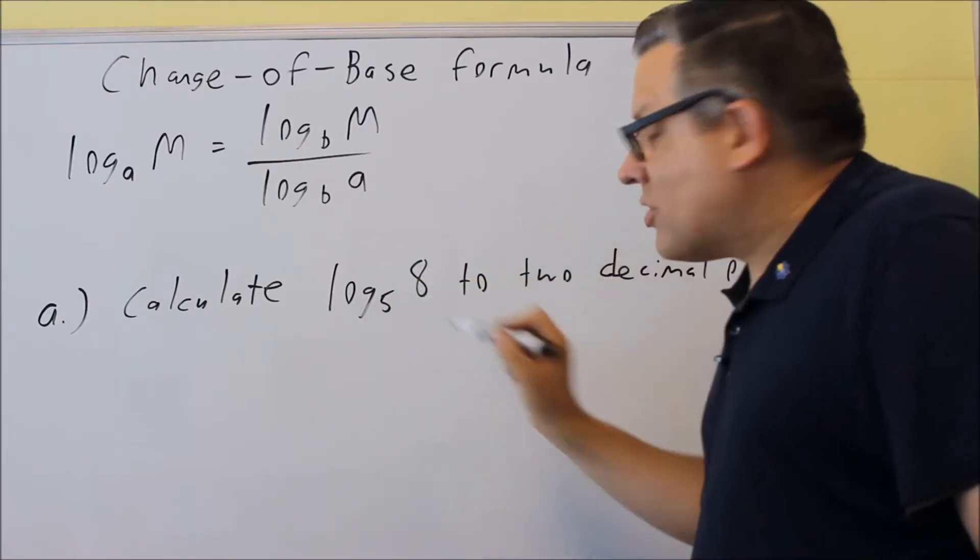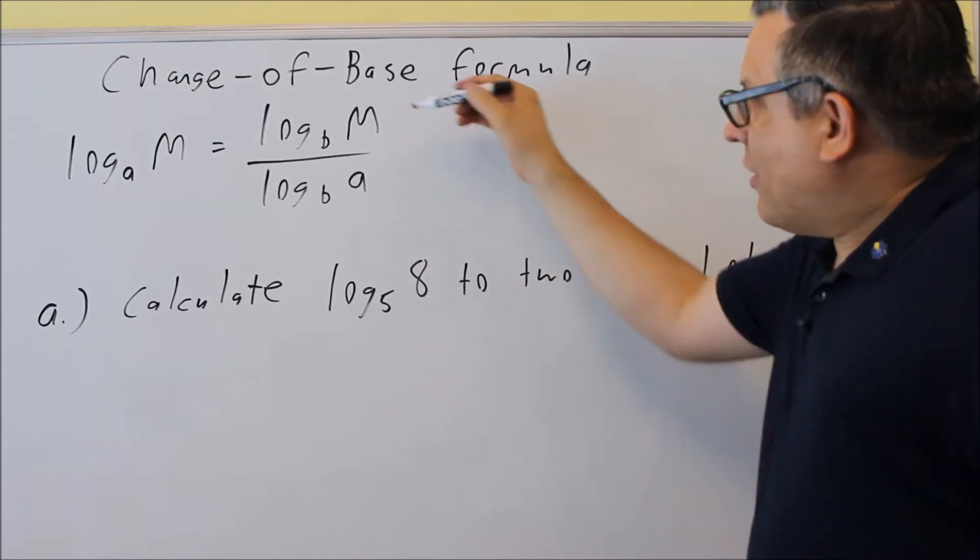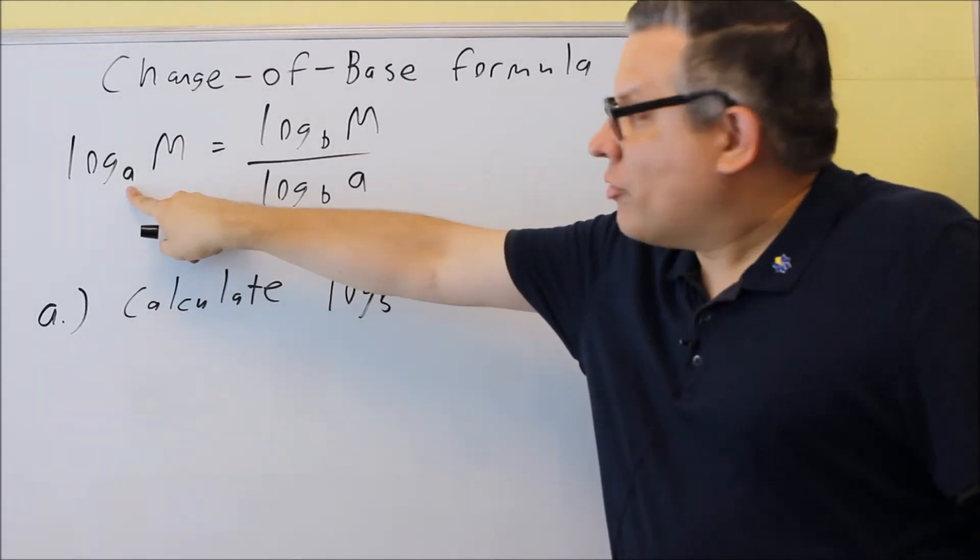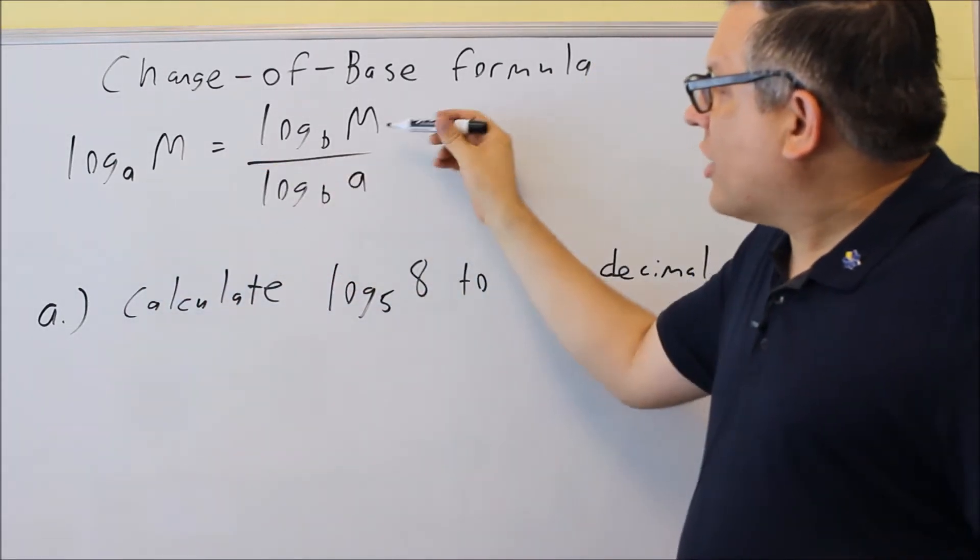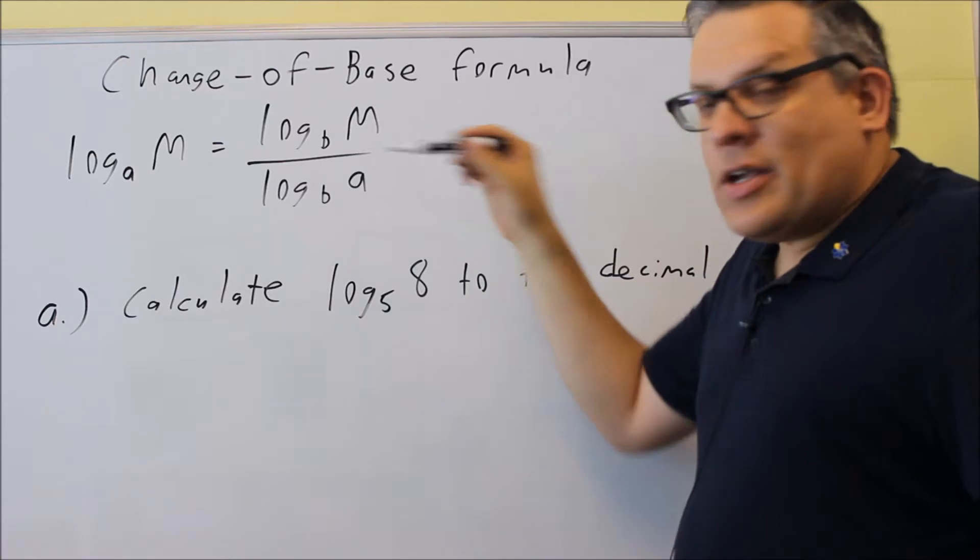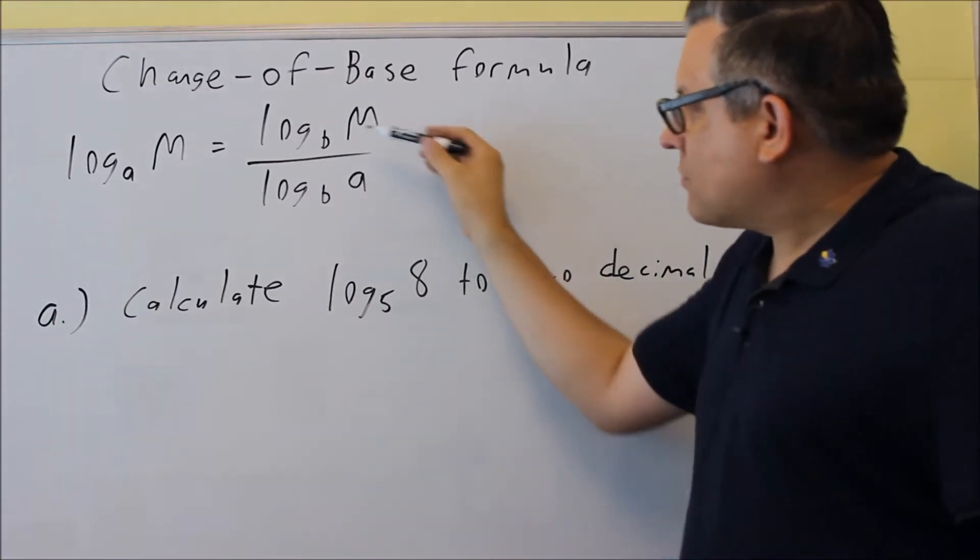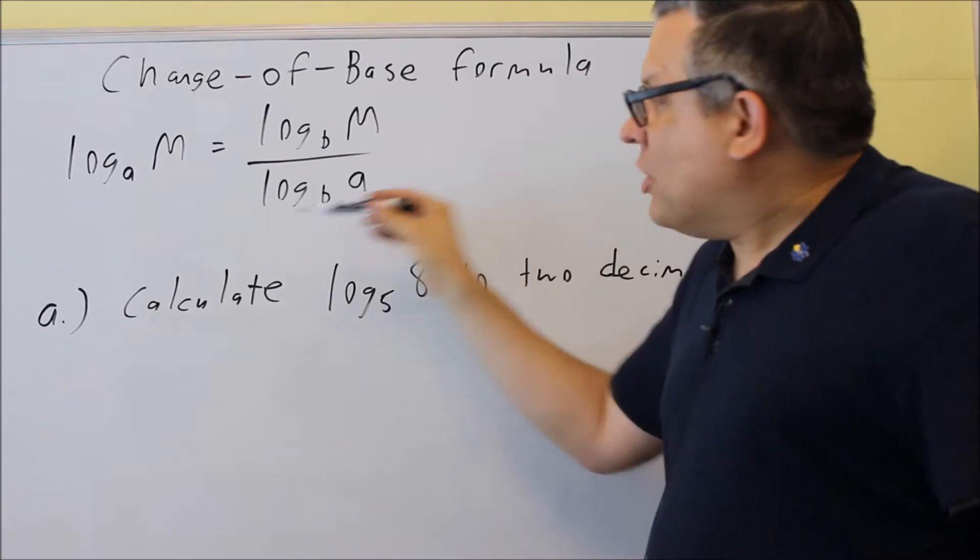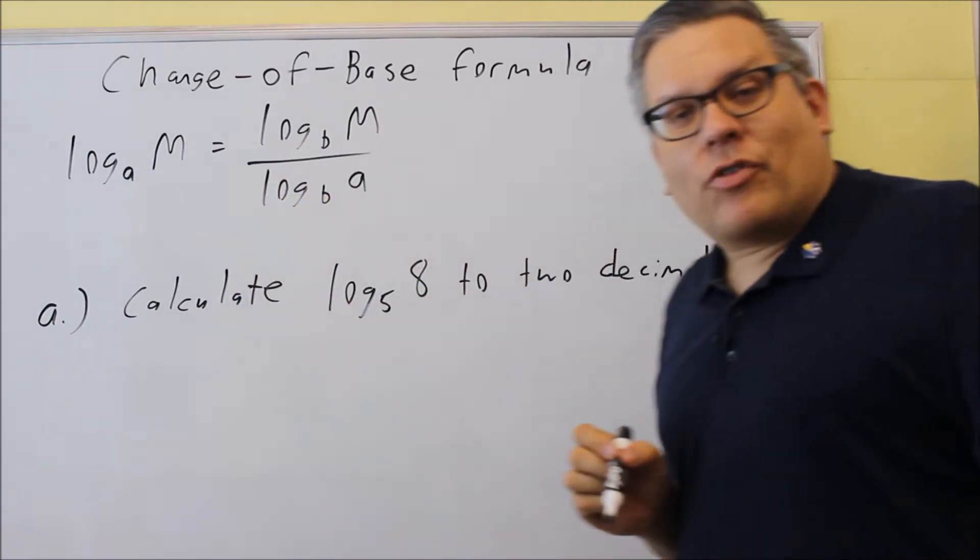So I can change this into whatever base I want. That's what the formula says. So if I have a base I'm not familiar with that's there, what I can do is introduce a log base B. So I'm going to do log base B of the big number here divided by log base B of the base that I have of the original log.